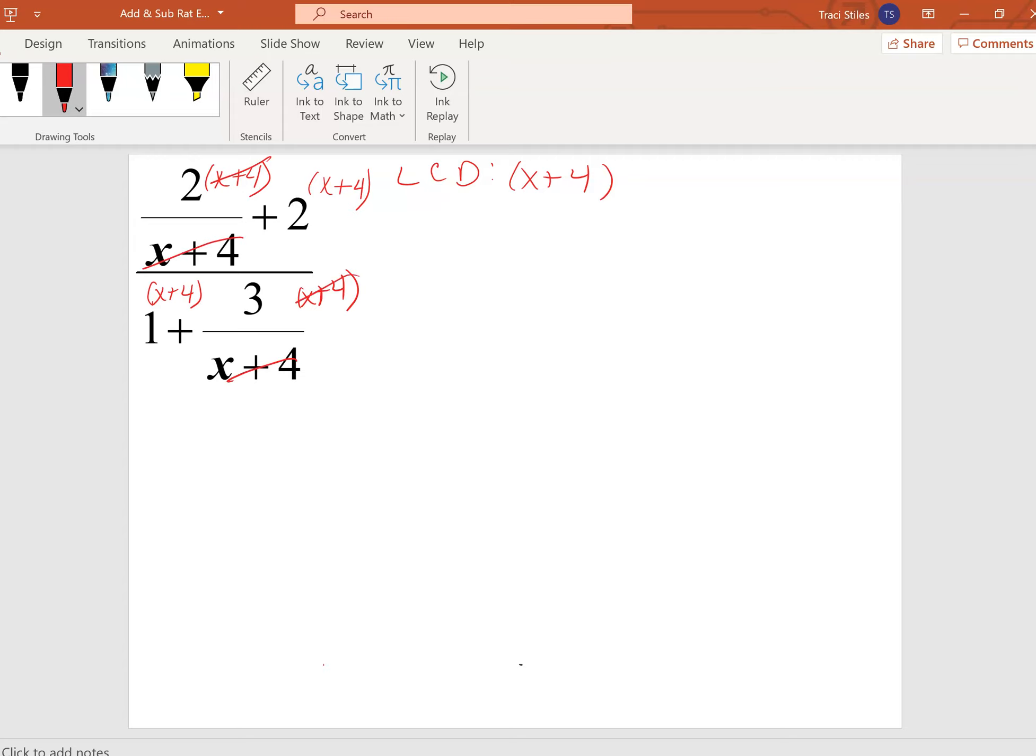Now here, the x plus 4's will cancel. So all you really have left is you've got a 2, and then 2 times x plus 4. So that 2 times x plus 4, I'm going to have 2x plus 8.